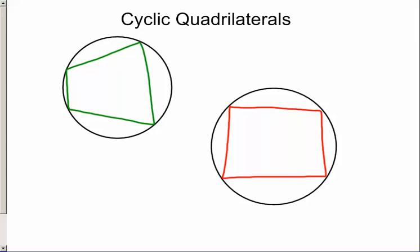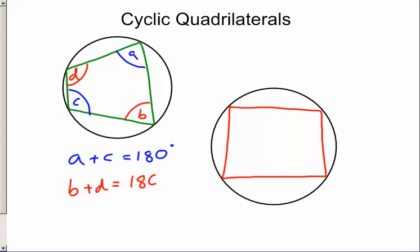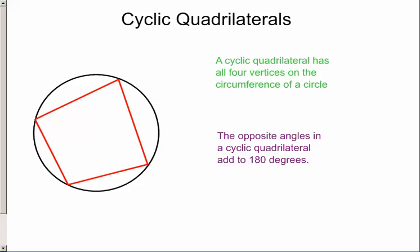And what do we know about a cyclic quadrilateral? Well, if we look at opposite corners, we're going to call these A and C, then we know angles A plus C are equal to 180 degrees. And we also know that the same is true of the other opposite vertices, B and D. So B plus D is equal to 180 degrees. So a cyclic quadrilateral is one with all four vertices on the circumference of the circle, and the opposite angles add up to 180 degrees.